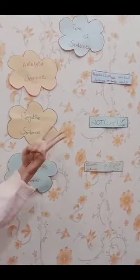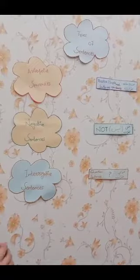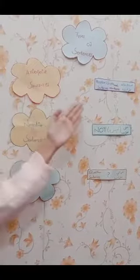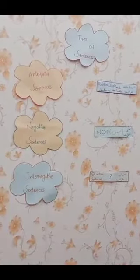Here are three types of sentences: affirmative sentences, negative sentences, and interrogative sentences. Affirmative sentences are also known as positive sentences or simple sentences. Interrogative sentences are also known as question sentences.